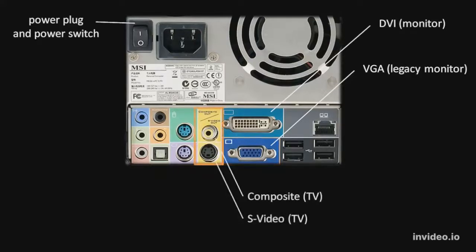On this particular computer, we happen to have outputs to send an image to a television. You probably recognize these from the back of televisions, VCRs, and DVD players. The one on top is called composite, and the one on the bottom is called S-Video, and these are also examples of legacy technologies. They're being phased out in favor of newer standards like, for example, HDMI.